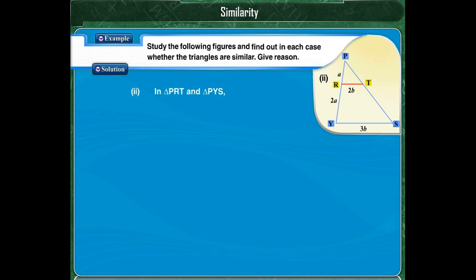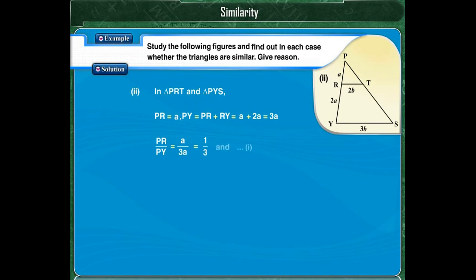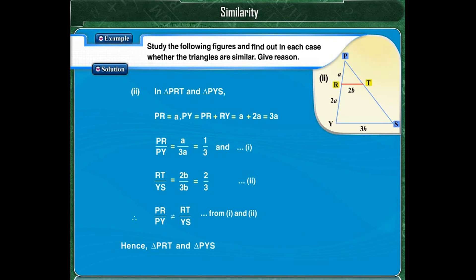In figure 2, consider triangle PRT and triangle PYS. Two sides and the included angle are given, so we apply SAS. PR equals A; PY equals PR plus RY, that is A plus 2A, which equals 3A. Therefore, PR upon PY equals A upon 3A, which is 1 upon 3. The ratio RT to YS is 2B upon 3B, which is 2 upon 3. Thus, the ratio PR upon PY is not equal to RT upon YS. Therefore, triangle PRT and triangle PYS are not similar triangles.